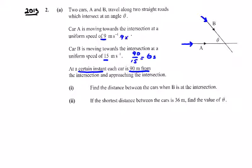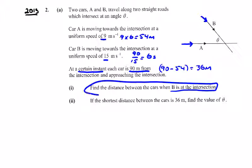A is going to travel 9 times 6, which is 54 meters in this time. So A is going to be 90 minus 54, which is 36 meters from the intersection. And that's the first part here: find the distance between the cars when B is at the intersection.